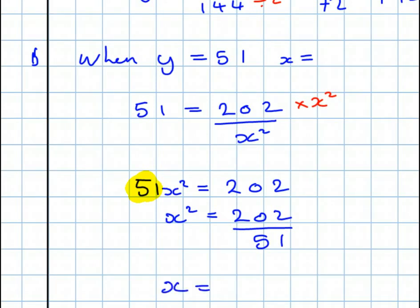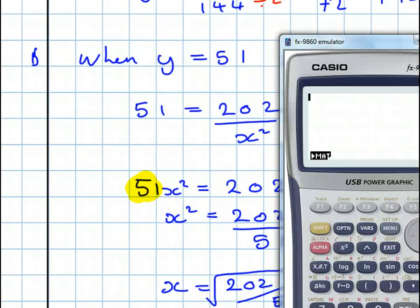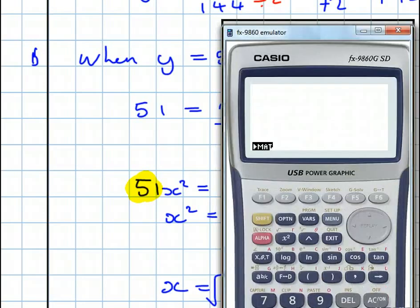You know the score by now. So X squared equals 202 over 51. So X is equal to 202 over 51, the square root of that. Now, let's demonstrate how we use our calculator for this. We're going to find the square root of 202 over 51.